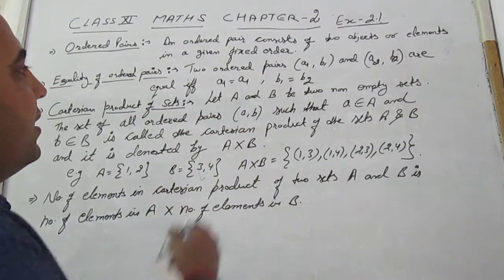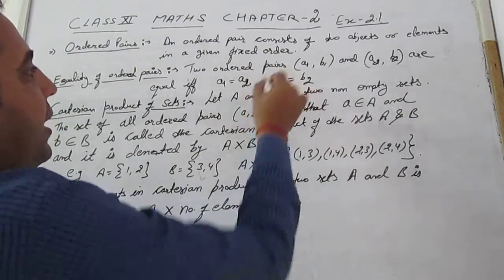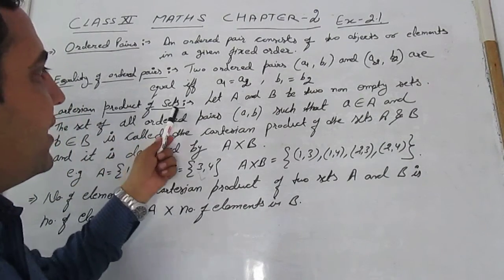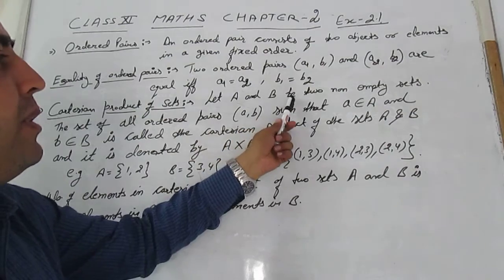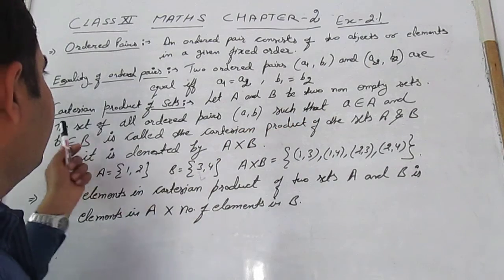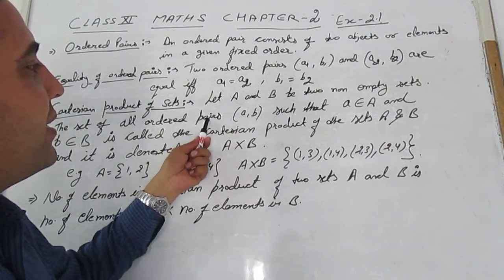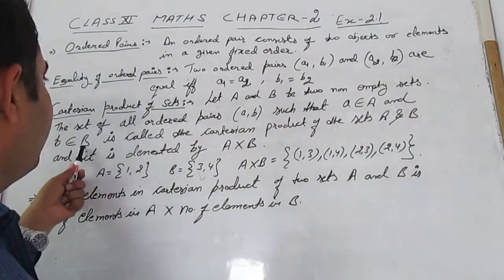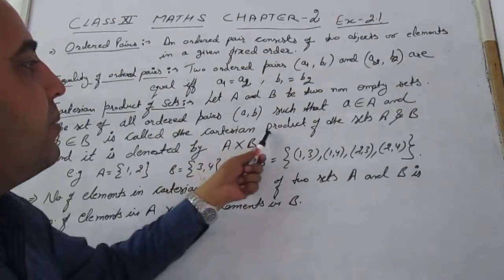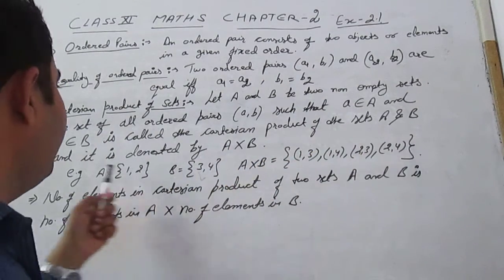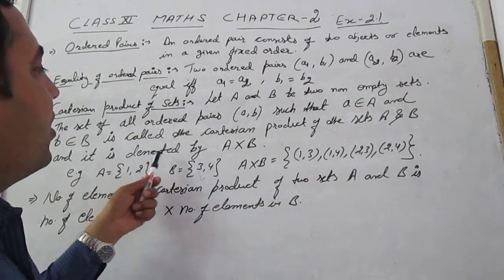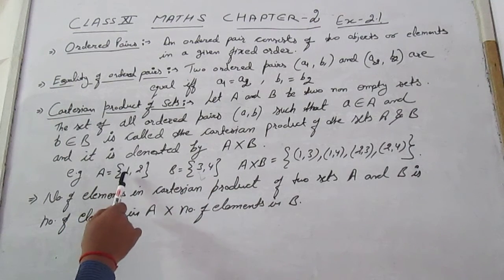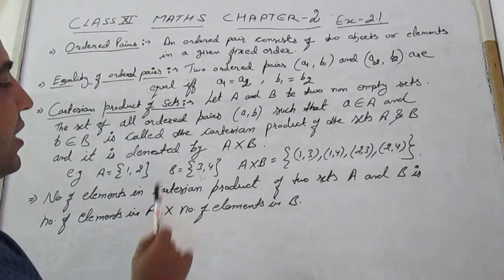Cartesian product of sets: Let A and B be two non-empty sets. The set of all ordered pairs (a, b) such that a belongs to A and b belongs to B is called the Cartesian product of sets A and B, denoted by A cross B. For example, set A has elements {1, 2} and set B has elements {3, 4}.